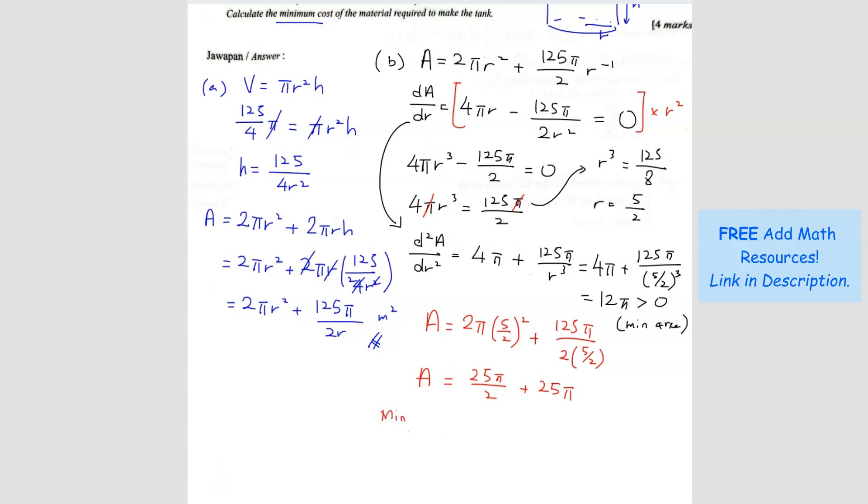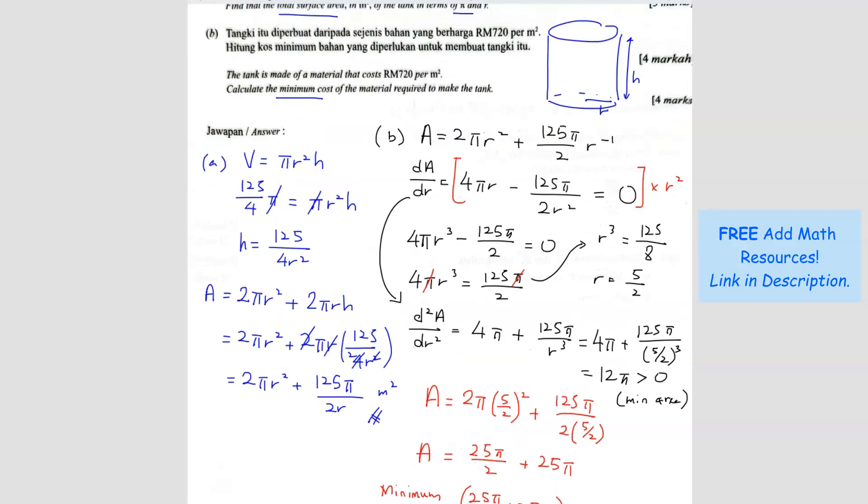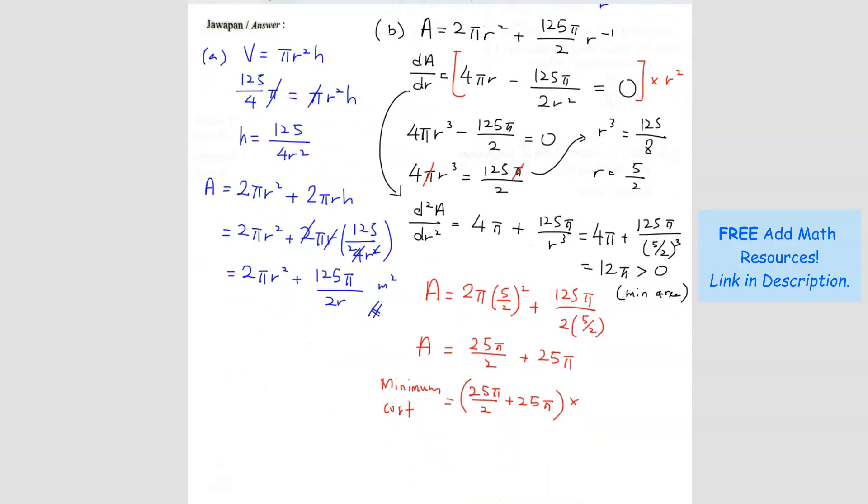So the minimum cost is going to be the area times the cost per square meter, which is 720. So this is the minimum cost.